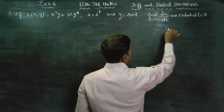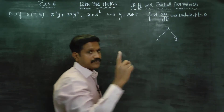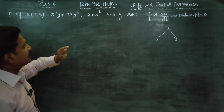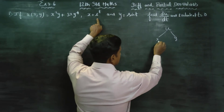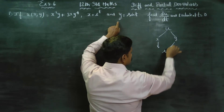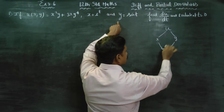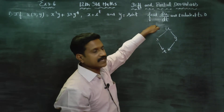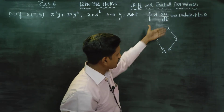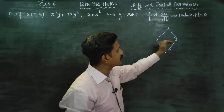u depends on x and y. But x is a function of t, and y is also a function of t — so x and y are both functions of t. We need to find du/dt. Since u depends on t only through the intermediaries x and y, we cannot directly find u's relationship with t.